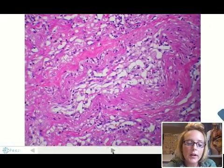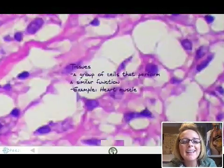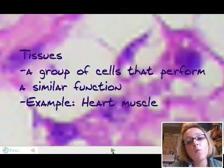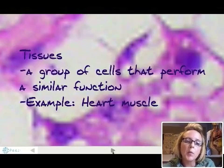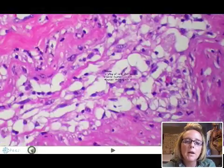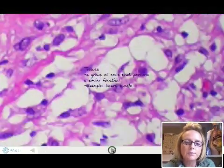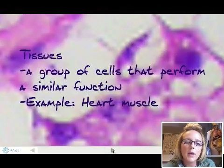Cells are organized into tissue. A tissue is a group of cells that performs a similar function. For example, you're looking at a slide of heart tissue. This heart tissue is made up of a bunch of heart cells organized together — heart muscle is your example here.